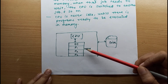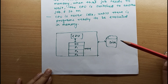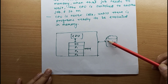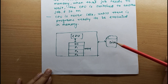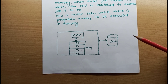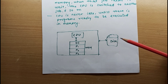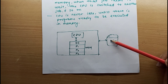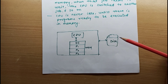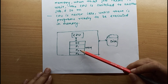The multiprogramming concept means that more than one program resides in the main memory at the same time, loaded from the disk. Now, one more concept arises here: what is the difference between a program and a process? A program is a passive entity — it is just a set of instructions stored somewhere on the disk, waiting to be executed. When a user wants to execute that program, it has to be loaded from the disk to the main memory.